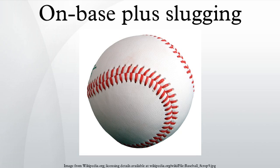History: On-base plus slugging was first popularized in 1984 by John Thorne and Pete Palmer's book 'The Hidden Game of Baseball.' The New York Times then began carrying the leaders in this statistic in its weekly by-the-numbers box, a feature that continued for four years. Baseball journalist Peter Gammons used and evangelized the statistic, and other writers and broadcasters picked it up. The popularity of OPS gradually spread, and by 2004 it began appearing on Topps baseball cards. OPS was formerly sometimes known as 'production,' for instance in early versions of Thorne's Total Baseball Encyclopedia and in the Stratomatic Computer Baseball game, though this term has fallen out of use.